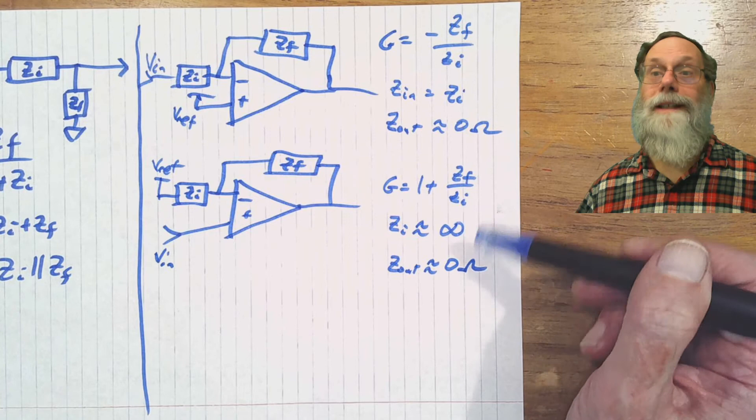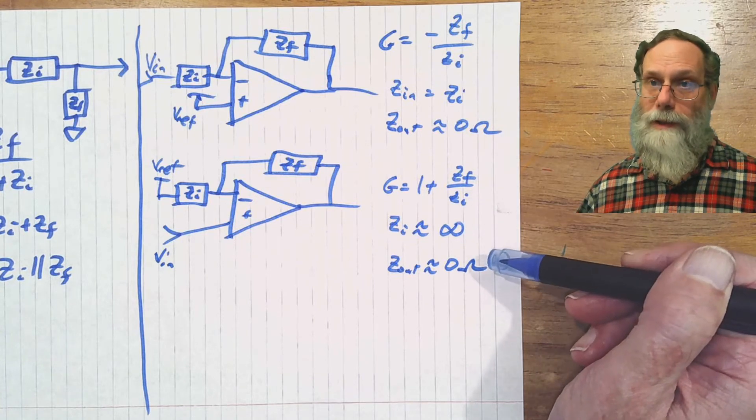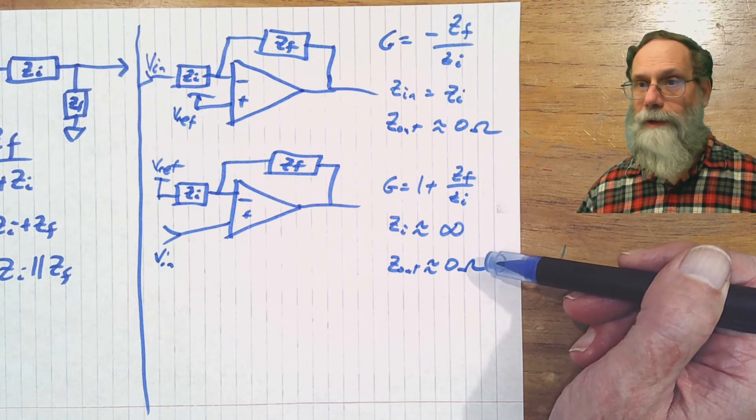And so we do sometimes use this non-inverting amplifier because it's got a very high input impedance, which is handy. It means we don't need any current from the input. And they both have very low output impedances. It's essentially zero if these were perfect op amps.